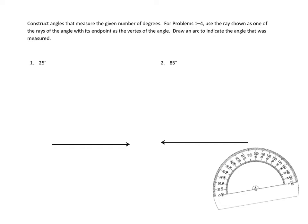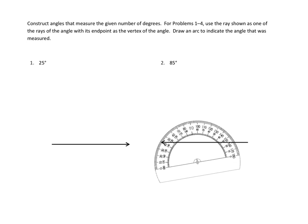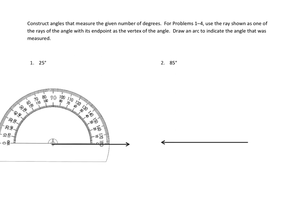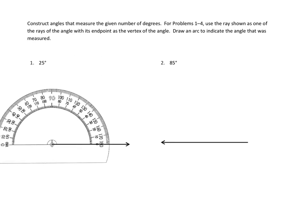Let's take a look at problem number one. We are going to construct angles that measure the given number of degrees. For problems one through four, use the ray shown as one of the rays of the angle with its endpoint as the vertex of the angle. Draw an arc to indicate the angle that was measured. So we have to figure out a 25-degree angle. I've got my protractor sitting over here, and I am going to move it over here, and I've got to align it just right, with the center right at the start point of that ray, and moving right along that line.